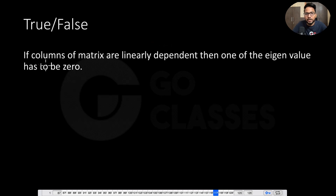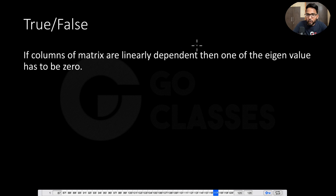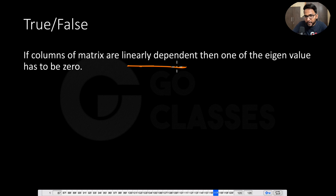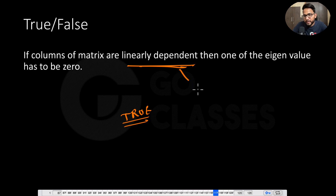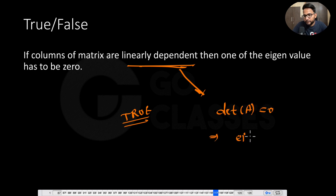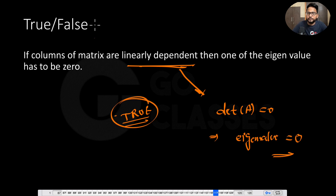Now, if the columns of a matrix are linearly dependent, then one of the eigenvalues has to be zero. If columns are linearly dependent, the determinant must be zero. If the determinant is zero, then the product of all eigenvalues is zero, which means at least one eigenvalue must be zero. So the answer is option 2: linearly dependent columns imply the determinant is zero, which implies one eigenvalue equals zero.